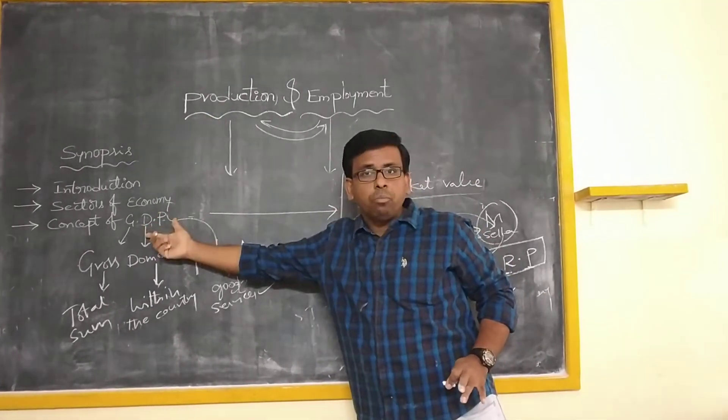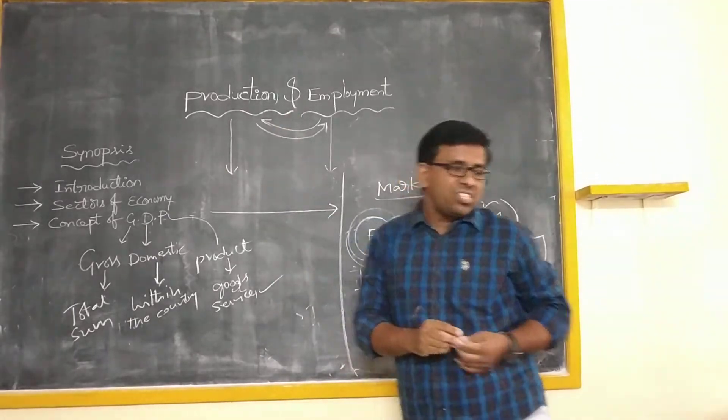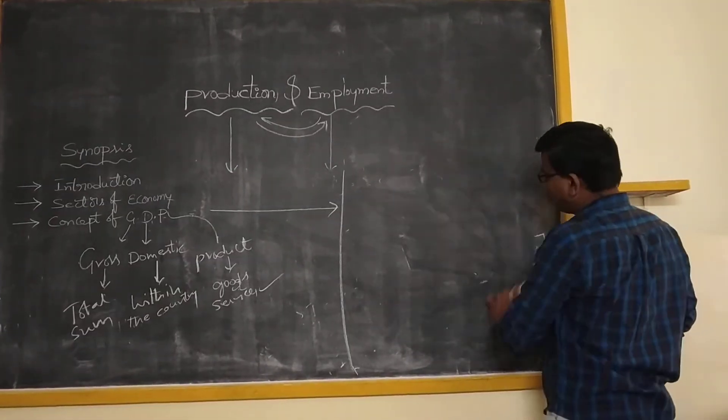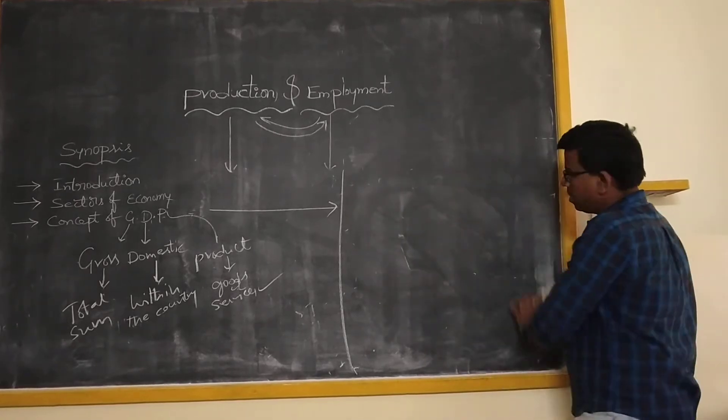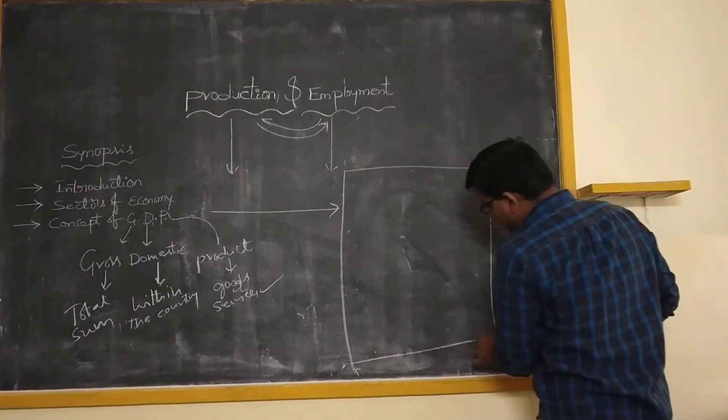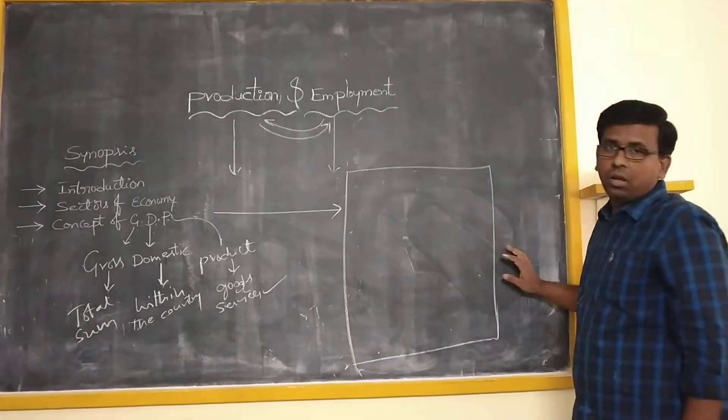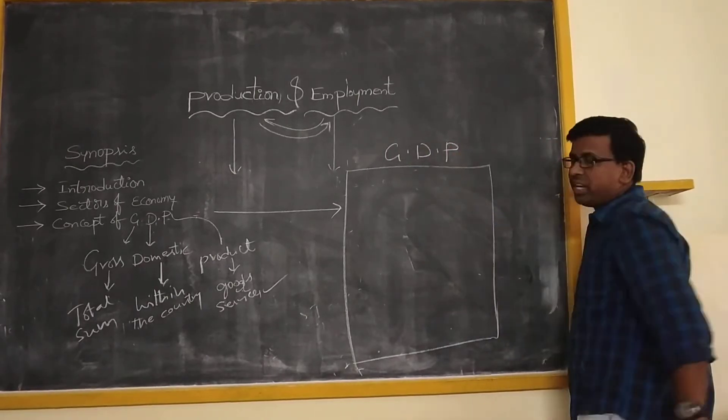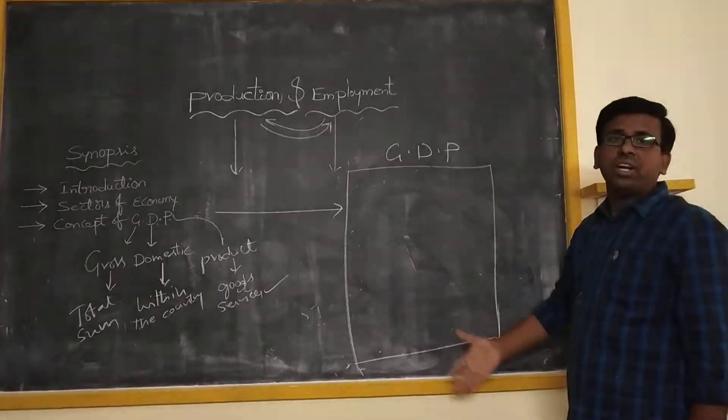That is taken up as a GDP of a country, or the total income of a country. Now based on the GDP value and the total income of the countries, the countries are given rankings. Based on the GDP, different countries are given different rankings.